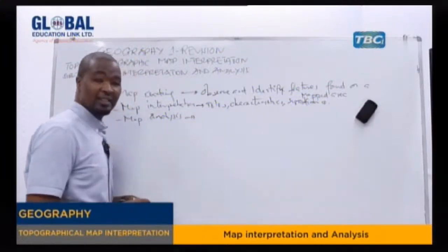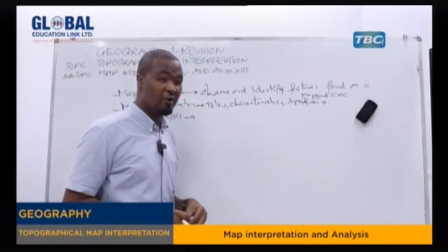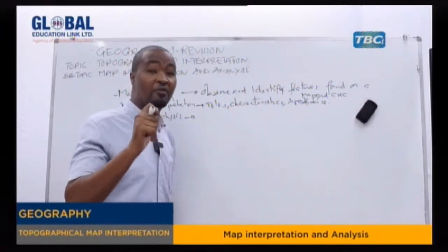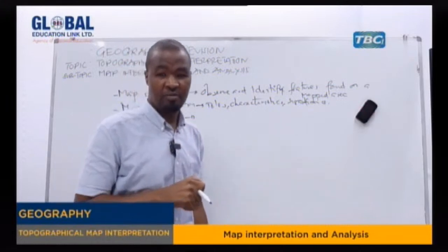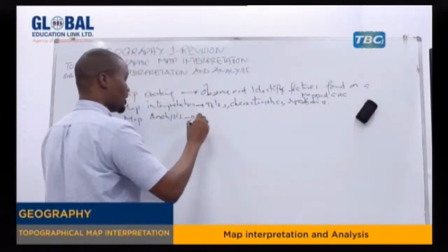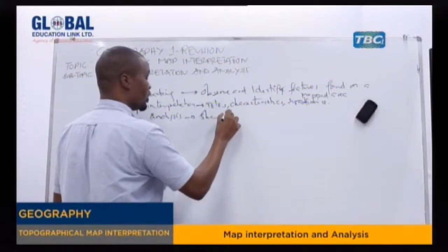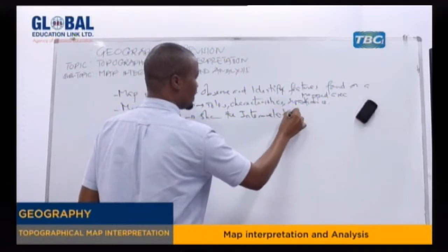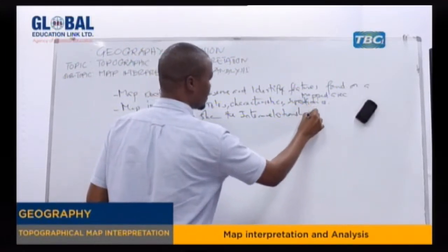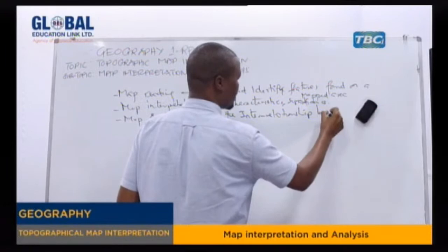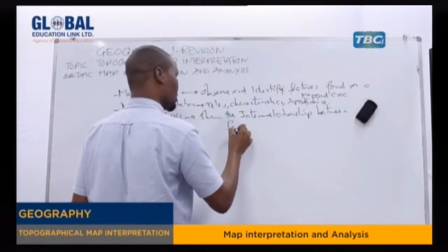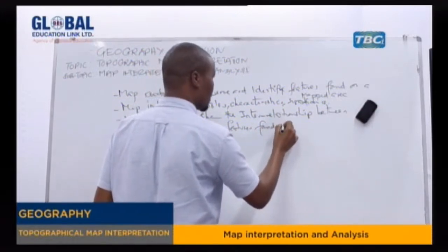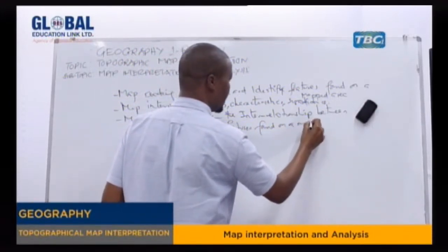Coming to what we call map analysis — in map analysis, after identifying the features, we have to show the interrelationship between each feature found on the map area. In map analysis, we show the interrelationship between features found on a map area.